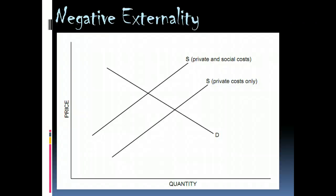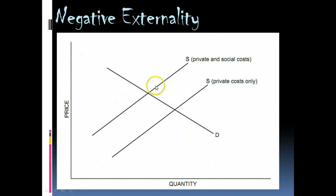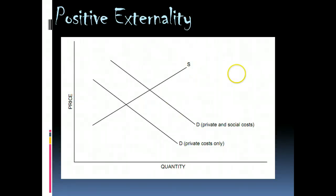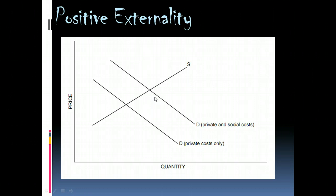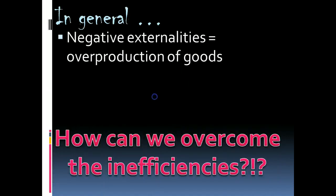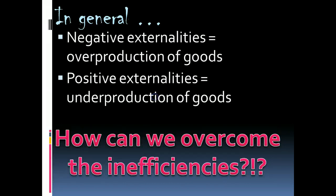With negative externalities, our willingness to supply negative externalities is going to be greater than what is socially efficient, so we'll end up oversupplying negative things. With positive externalities, our demand for those positive things is much less than the socially optimal level, because it costs us more to get to that socially efficient level than we're willing to pay, so we underproduce good things. In essence, negative externalities lead to the overproduction of bad, and positive externalities lead to underproduction of positive things without some external force.